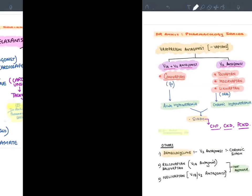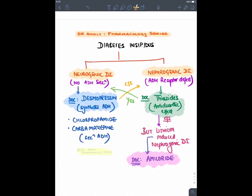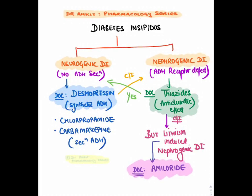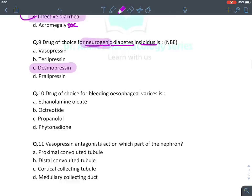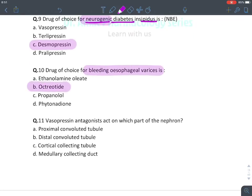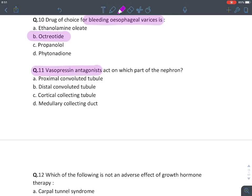Drug of choice for neurogenic diabetes insipidus: Diabetes insipidus (DI) occurs when there is no ADH or the ADH receptors on the kidney are defective. No ADH secretion is neurogenic DI; defective receptors is nephrogenic DI. Drug of choice for neurogenic DI is desmopressin. You can also give chlorpropamide or carbamazepine, which stimulate ADH secretion. For nephrogenic DI, give thiazide diuretics — except in lithium-induced DI, where amiloride is the drug of choice. The answer for neurogenic DI is desmopressin. For bleeding esophageal varices, the answer is octreotide. Vasopressin antagonists act on the medullary portion of the collecting duct.